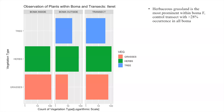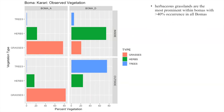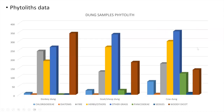Abisha's grassland is the most prominent within Bomas F controlled transect, with greater than 28% occurrence in all Bomas. Wood vegetation is in an occupied site. From Karari, Abisha's grassland is the most prominent within Bomas, with 40% occurrence in all Bomas. Wood trees are more prominent outside, but when you look inside, they are very low. Dung samples from goat, donkey, and cow show that wood is more prominent in donkey dung because of the donkey's feeding habits.